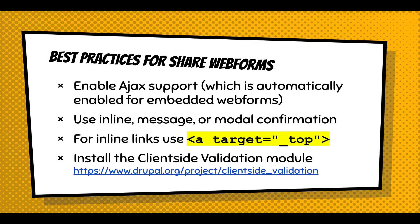Some best practices: you should enable Ajax support for your forms, which is automatically enabled when you embed a form, but it helps when you're experimenting with the form. For the confirmation with Ajax, it's recommended that you use an inline page, a message at the top, or a modal. For inline links, because the form is in an iframe, you mostly want a target top to pop users out of the iframe, since you're not going to style your whole site to fit in an iframe. And with Ajax, I strongly recommend enabling the client-side validation module — it provides a cleaner experience where they don't have to go back to the server, and it'll give them validation information as they're filling out the form, making for a nicer user experience.